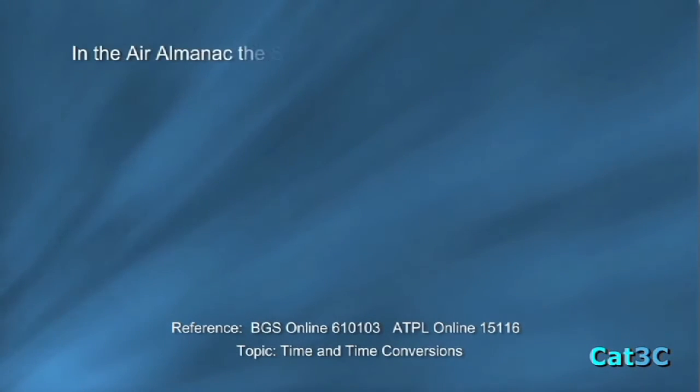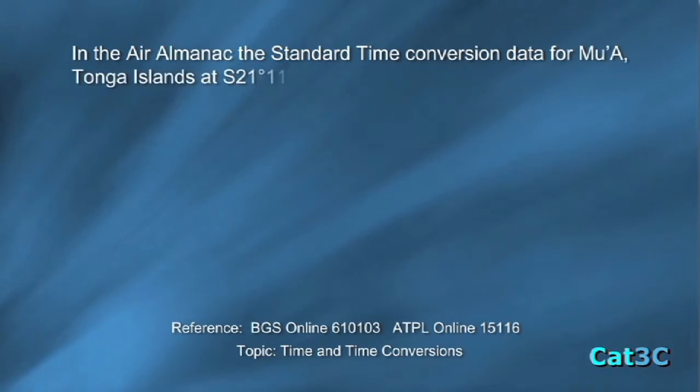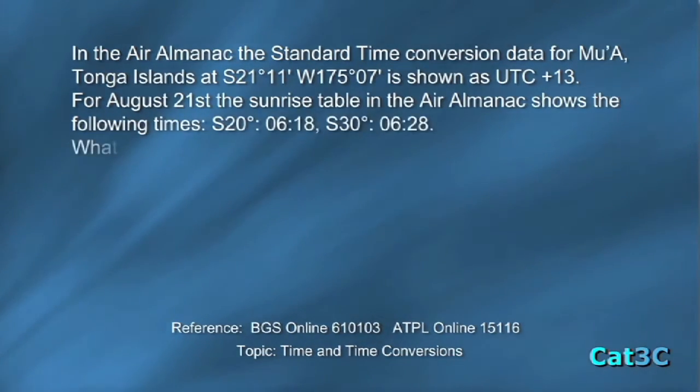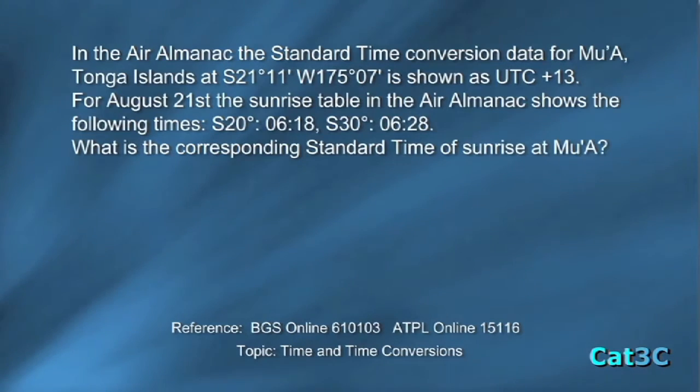In the Air Almanac, the standard time conversion data for Mua, Tonga Islands at south 21 degrees 11 minutes, west 175 degrees 7 minutes is shown as UTC plus 13. For August the 21st, the sunrise table in the Air Almanac shows the following times: south 20 degrees 0618, south 30 degrees 0628. What is the corresponding standard time of sunrise at Mua?